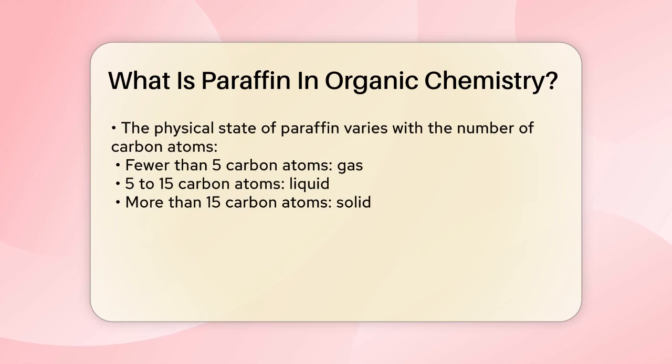For example, methane, ethane, propane, and butane are all types of paraffin alkanes.